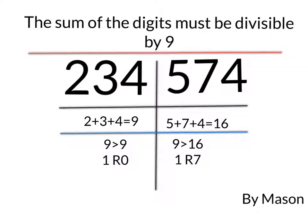9 Divisibility Rule by Mason. Today I'm going to be showing you guys how to tell if a number is divisible by 9 or not. The 9 Divisibility Rule is the sum of the digits must be divisible by 9.